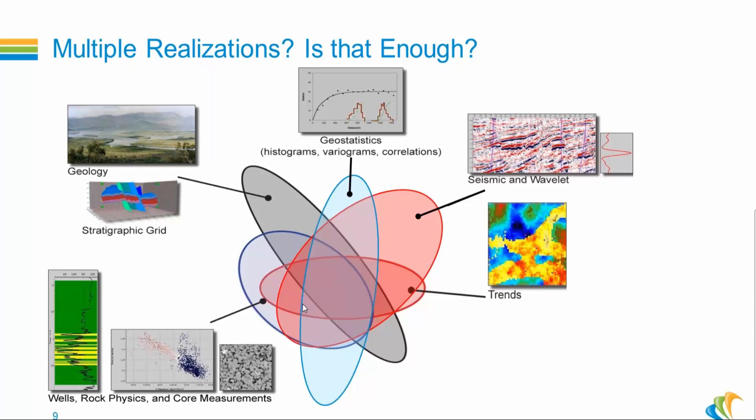And the only way to get a realistic uncertainty quantification is to take into account both sources of uncertainty, not only the first one. The first one is what is traditionally done with geostatistical methods, generate a large number of realizations from the same settings. This is good, but this is not enough.